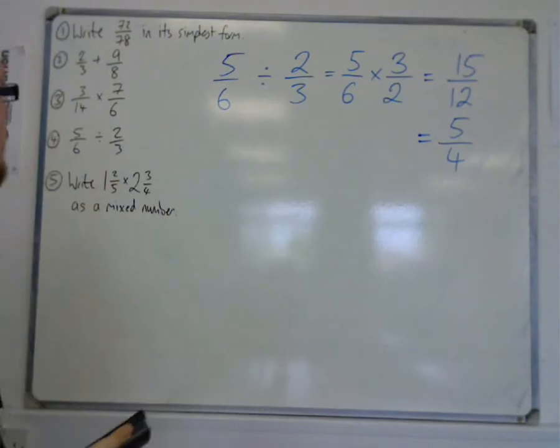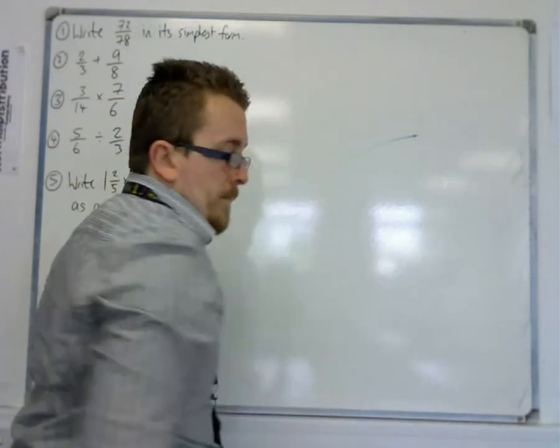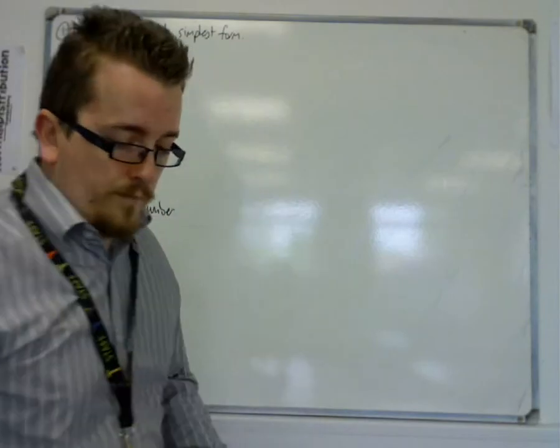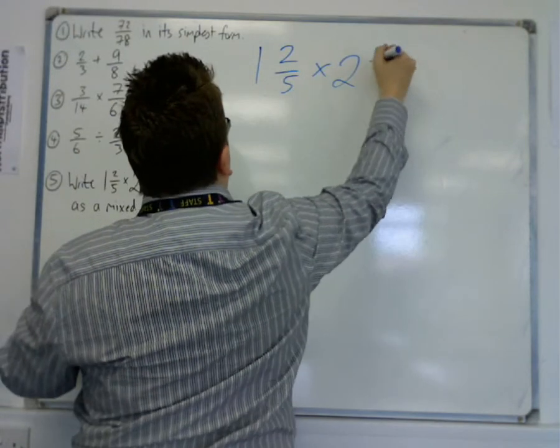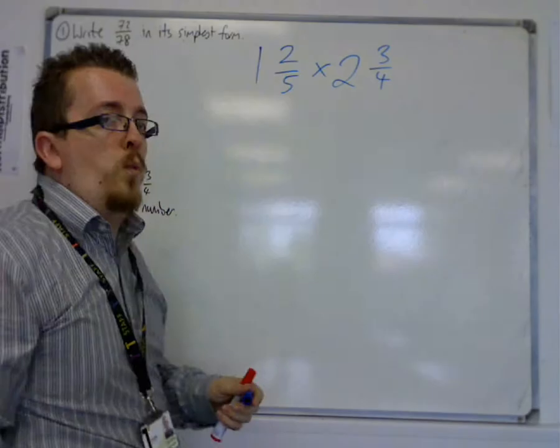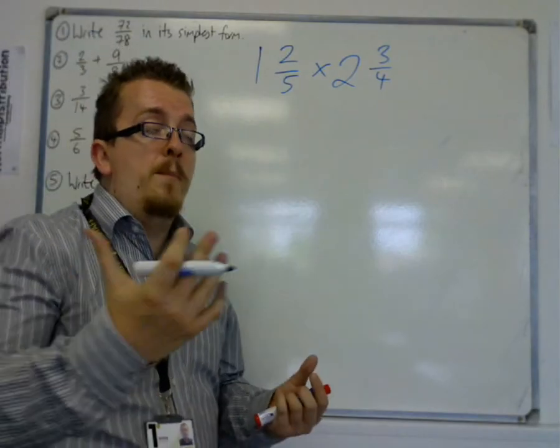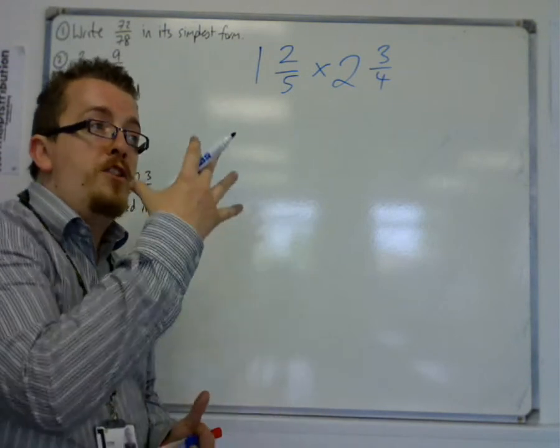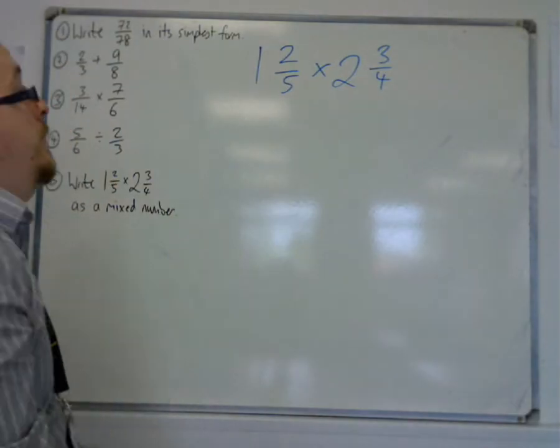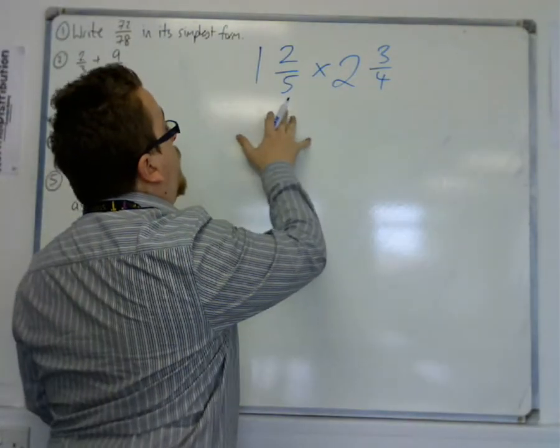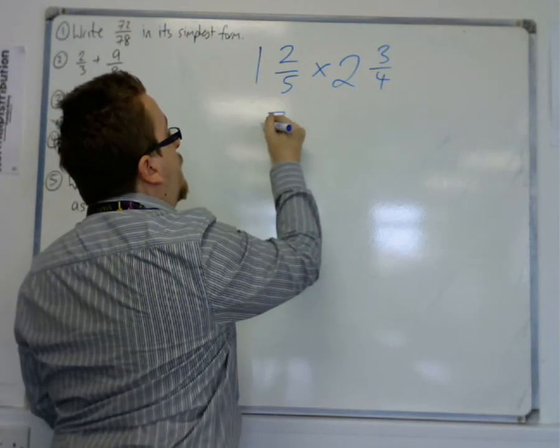So last but not least, we're going to deal with a multiplication of mixed numbers. So the mixed numbers are 1 and 2 fifths, and 2 and 3 quarters. So one way of doing this is to convert the mixed numbers into improper fractions. Improper fractions are fractions where the numerator, the number at the top, is larger than the denominator, the number at the bottom. So 1 and 2 fifths. Well, 1 is 5 fifths. So 5 fifths and 2 fifths make 7 fifths.